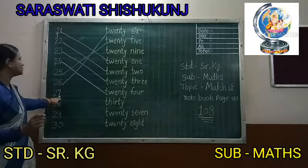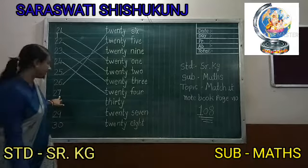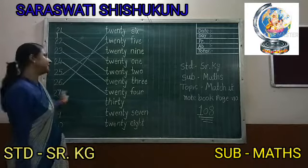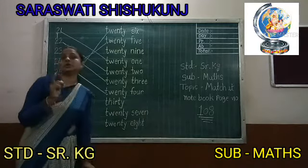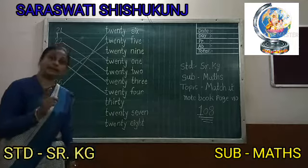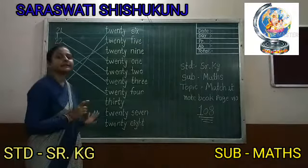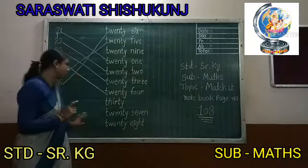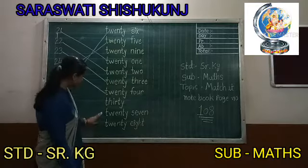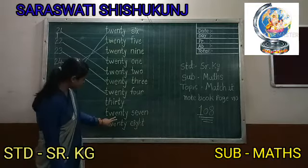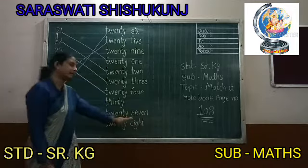Now match number 27. And what is the number name of 27? If you look at the number names at your home like this, then you can find them easily. T, W, E, N, T, Y — Twenty. S, E, V, E, N — 7. Twenty Seven, 27.